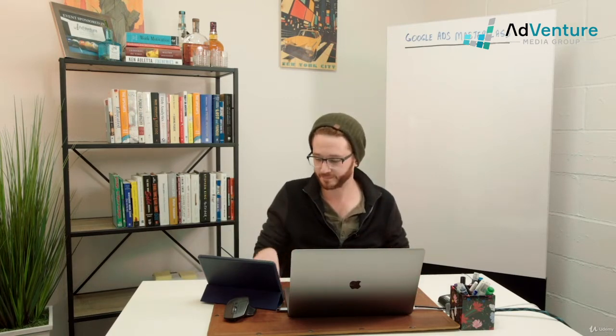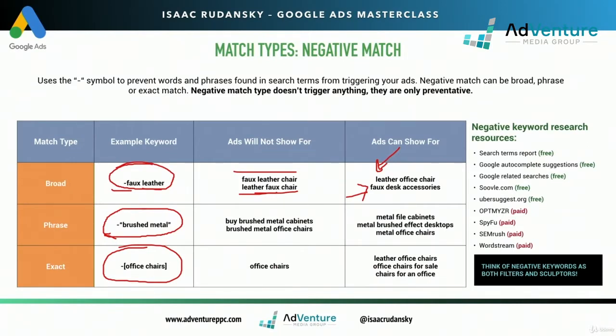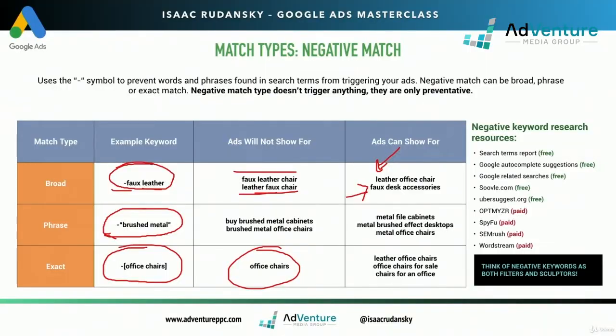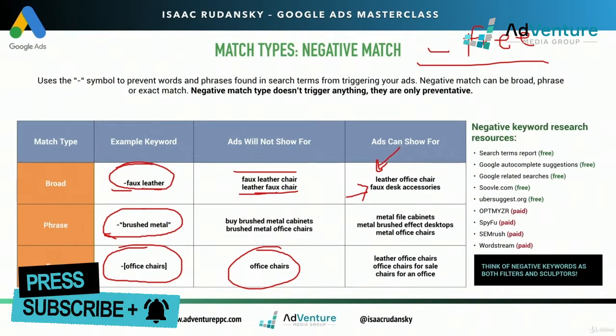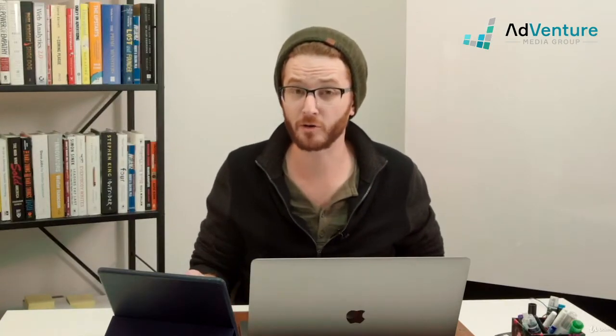So in that way it's sort of an opposite. If my negative exact match keyword is negative [office chairs], my ads will not show for the search 'office chairs,' but could show for 'leather office chairs,' 'office chairs for sale,' or 'chairs for an office.' The only time I block is for that exact query. For example, if I sell office chairs and I'm seeing 'free' show up in search terms, I don't want to pay for a click from someone looking for free office chairs. How would I treat 'free'? Negative broad match — so whenever 'free' shows up in any search query, it won't trigger any of my ads.